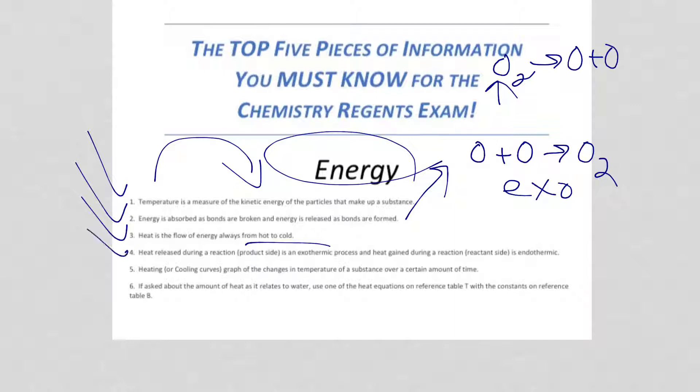Number four, heat released during a reaction. If it's an exothermic process, you're going to see energy as a product. For example, the formation of water: H2 plus O2 forming H2O plus energy. Since energy is showing up as a product, it's exothermic. If energy was on the reactant side, it would be endothermic.